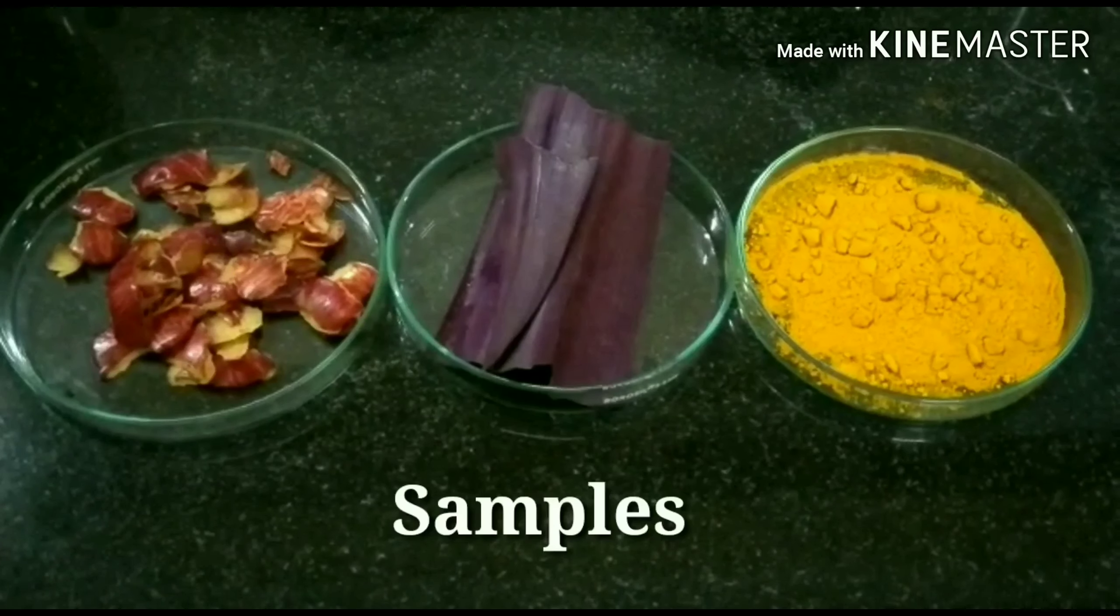Paper chromatography. Aim: to separate the pigments from the leaves of Tradescantia, apple peel, and turmeric powder.